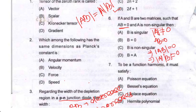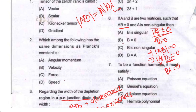Since the determinant of A is not equal to 0 and AB = 0, multiplying through, the determinant of B must be 0. Therefore B is singular. So option A is your correct option.